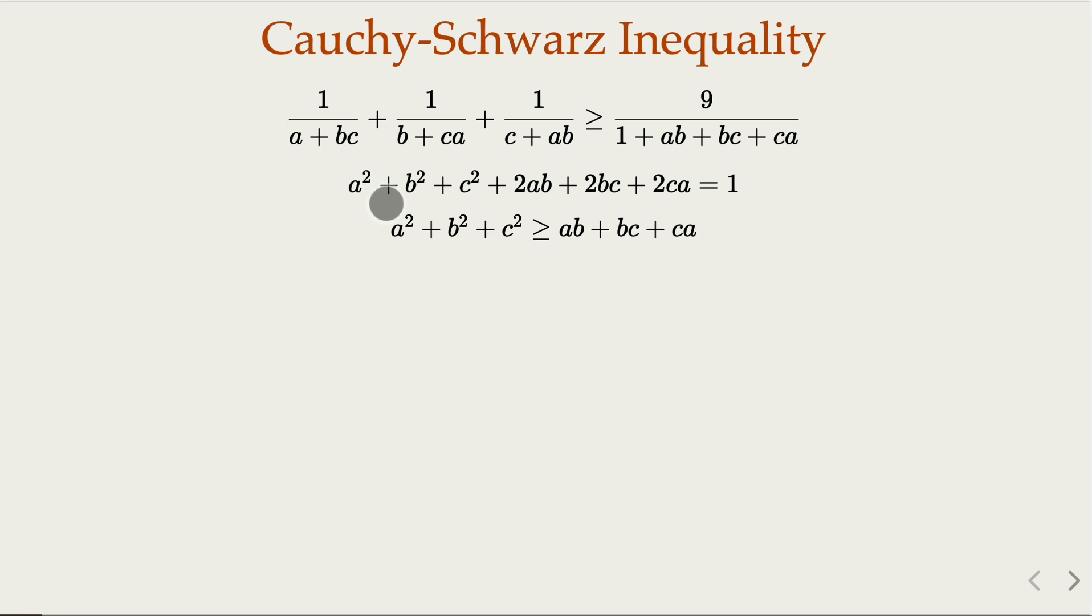Now for the equality here and the inequality, what you do is you add 2ab, bc, and ca on both sides of the inequality. When you get here on the left-hand side, it's going to be 1 greater or equal to 3 of the cross product here. So what do we have?